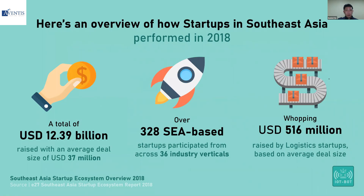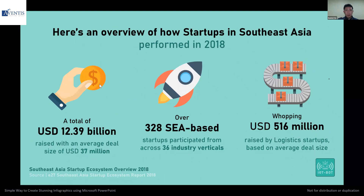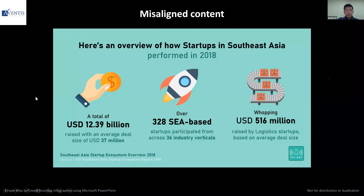For this infographic example, you'll notice that the problem is the alignment. For some tools like Canva, it's a bit more difficult to ensure that your content is aligned. Even when creating with PowerPoint, alignment also tends to be quite a jarring issue that people are still facing these days. You'll find that maybe the content on the slides looks good, but then the alignment is off.